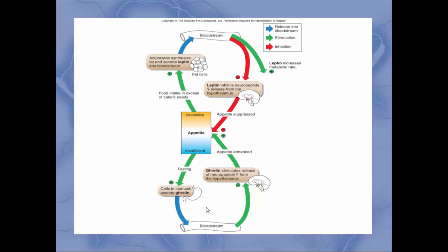Here's a flow chart with all three of those connected. Whenever you fast, cells in your stomach will secrete ghrelin into the bloodstream. Ghrelin will stimulate the hypothalamus to secrete NPY, which will increase your appetite back to normal levels. If you eat too much, then leptin will be secreted by the fat cells, go into your blood, and inhibit NPY to turn down your appetite. So leptin decreases appetite and NPY will increase appetite.